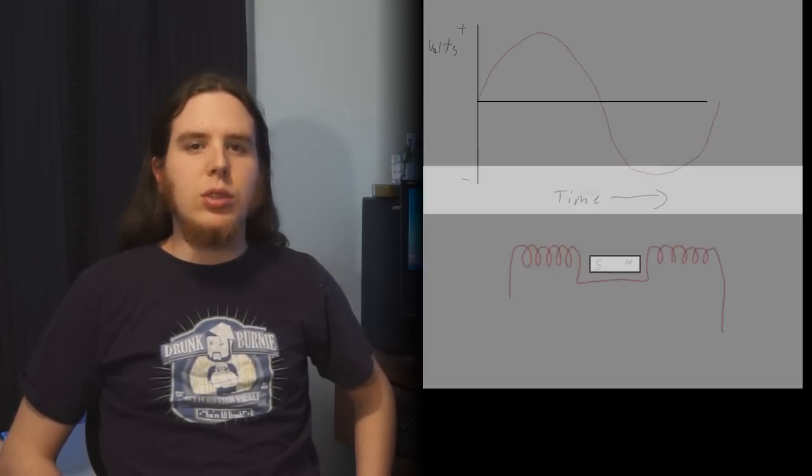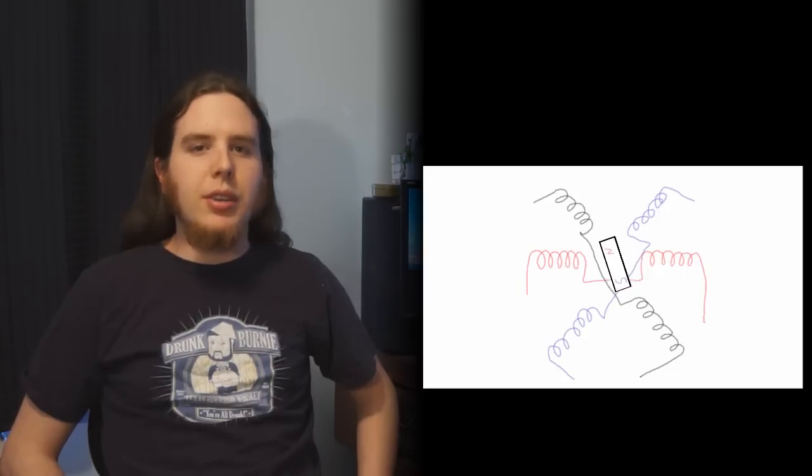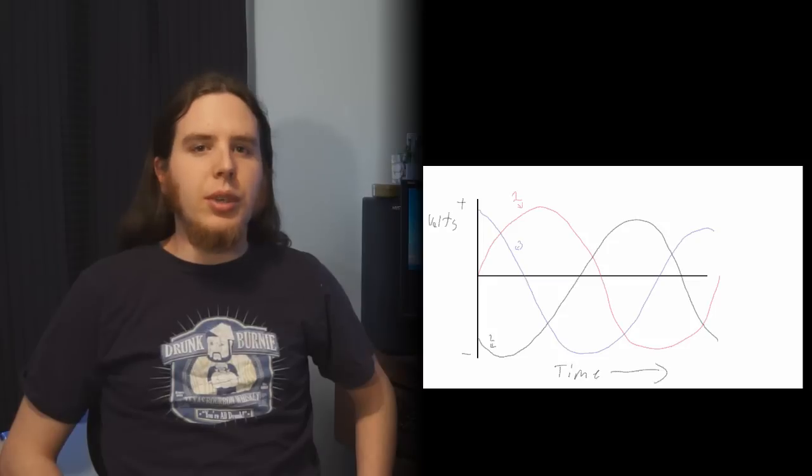To make three-phase electricity, you add two more coils to the same setup, but each coil is offset 120 degrees from the other coils. This means that you have three pairs of wires that have three voltages across them that are out of phase from each other by 120 degrees.